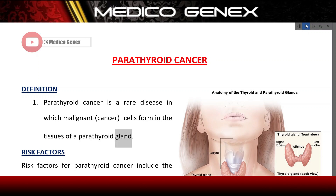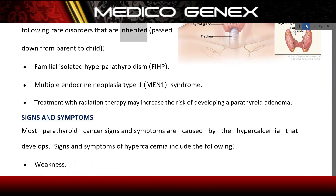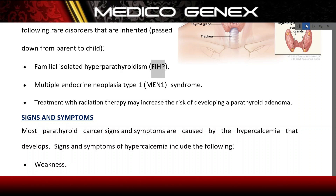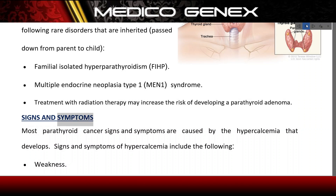Risk factors for parathyroid cancer include the following rare disorders that are inherited — passed down from parent to child: familial isolated hyperparathyroidism (FIHP) and multiple endocrine neoplasia type 1 (MEN 1) syndrome. Treatment with radiation therapy may also increase the risk of developing a parathyroid adenoma.